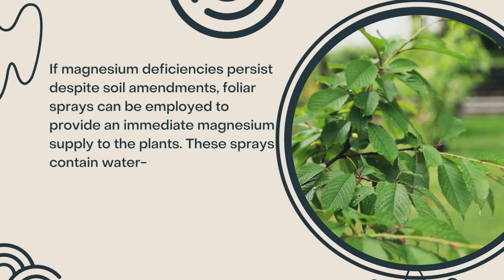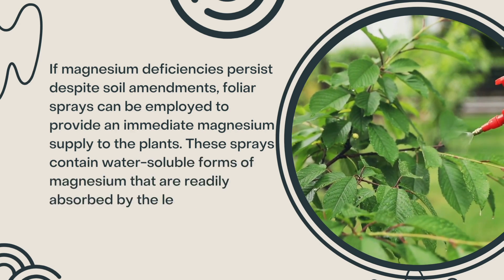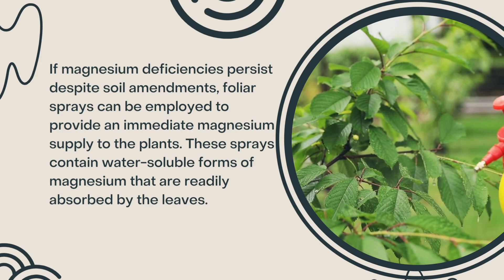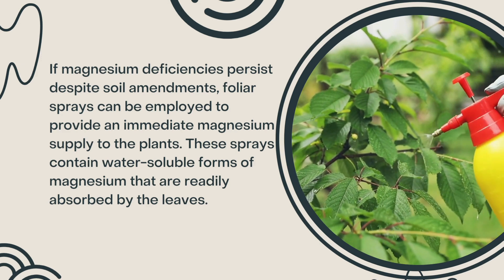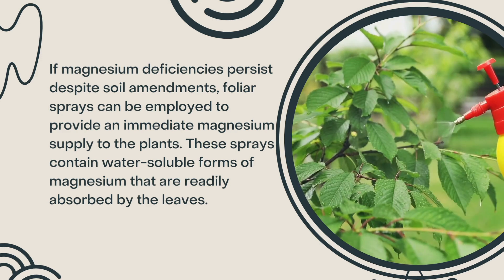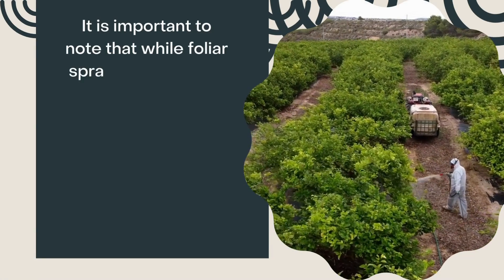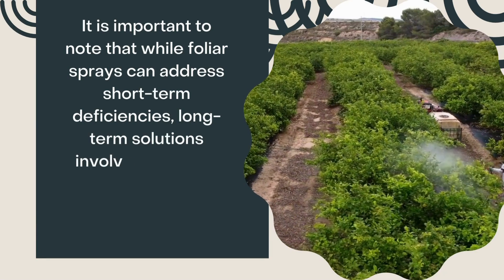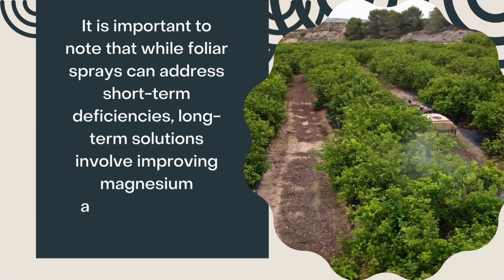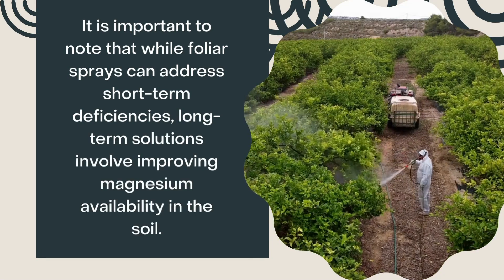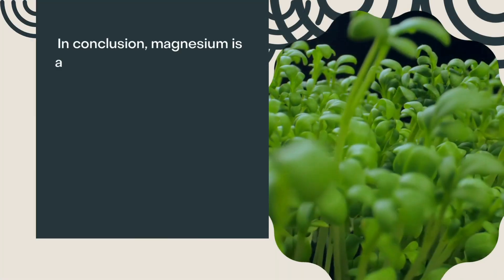If magnesium deficiencies persist despite soil amendments, foliar sprays can be employed to provide an immediate magnesium supply to the plants. These sprays contain water-soluble forms of magnesium that are readily absorbed by the leaves. It is important to note that while foliar sprays can address short-term deficiencies, long-term solutions involve improving magnesium availability in the soil.